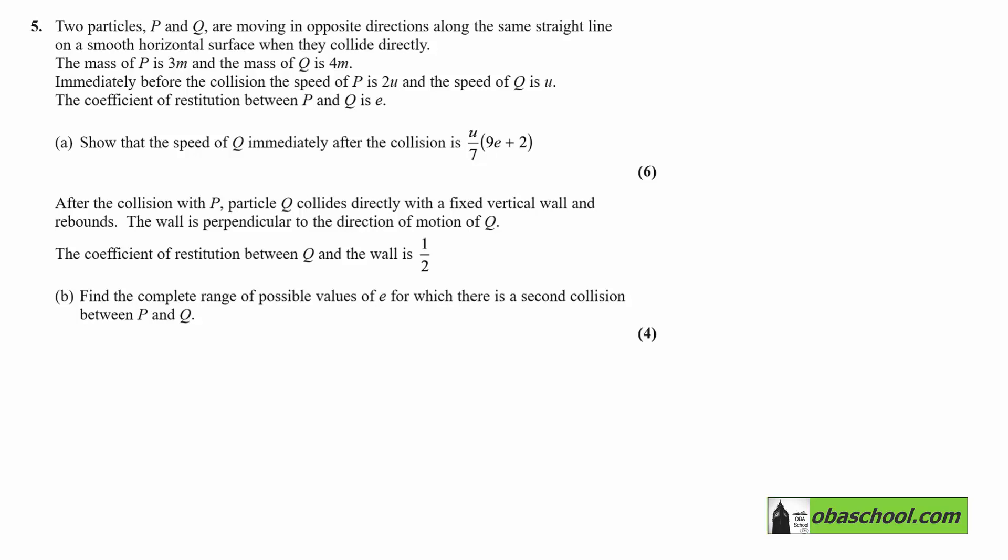The mass of P is 3m and the mass of Q is 4m. Immediately before the collision, the speed of P is 2u and the speed of Q is u. The coefficient of restitution between P and Q is e.